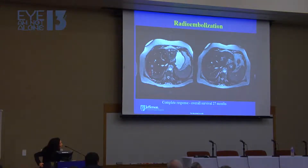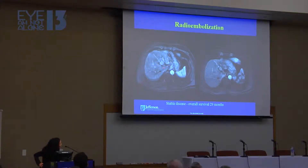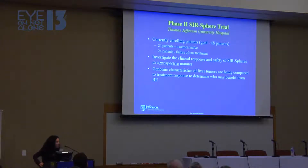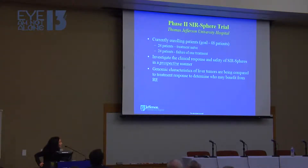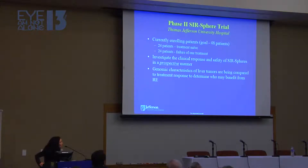This is an example of a patient who had a complete response — prior to radioembolization and after treatment — with an overall survival of 27 months. Another gentleman had stable disease following radioembolization and an overall survival of 29 months. We are currently enrolling patients for a Phase II SIR-Spheres trial here at Jefferson to investigate clinical response and safety prospectively, and to identify who will benefit — including obtaining liver biopsies prior to treatment to examine genetic characteristics.